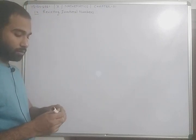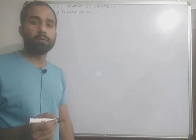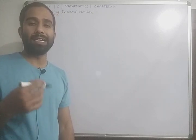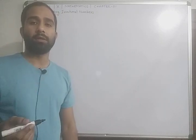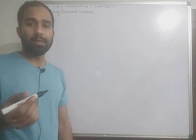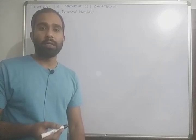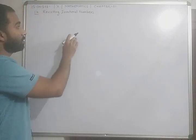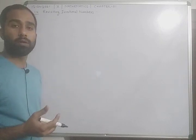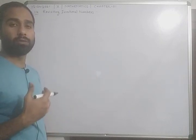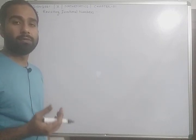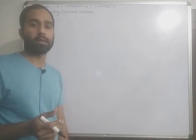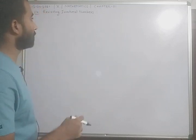Today we are going to prove that under root 2, under root 3, or any such number is an irrational number. During the process of proving that under root 2 is an irrational number, we need to understand some important points. So let us discuss.